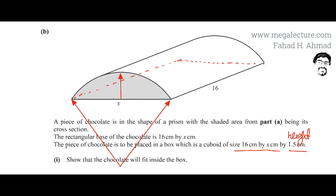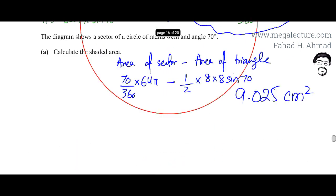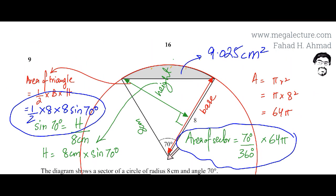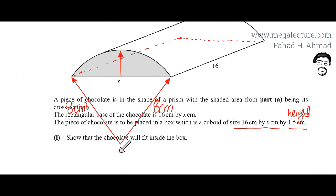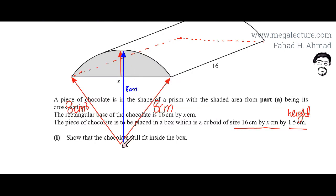I've redrawn the sector. Both sides are 8 centimeters — the radius of the circle. The total length from center to the arc along the axis of symmetry is also 8 centimeters. I need to find the height of the shaded gray section, marked in green, by subtracting a known length from 8 centimeters.